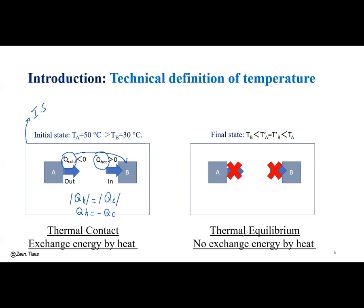As the final state, when we have thermal equilibrium, we have a constant temperature where TA equals TB. In this case we don't have an exchange of energy between A and B, so Q equals zero — we have thermal equilibrium between A and B. The final temperature of A and B must be between 50 and 30, because TA will decrease and TB will increase until they meet at a point between 50 and 30.